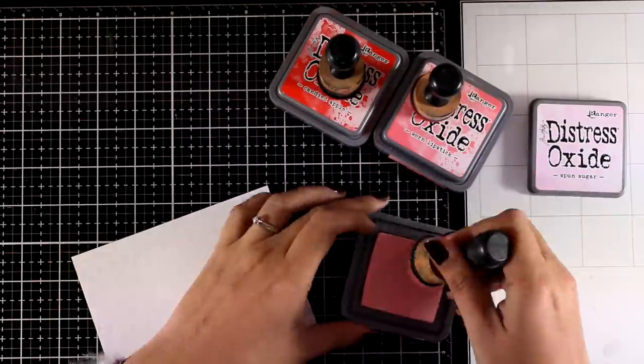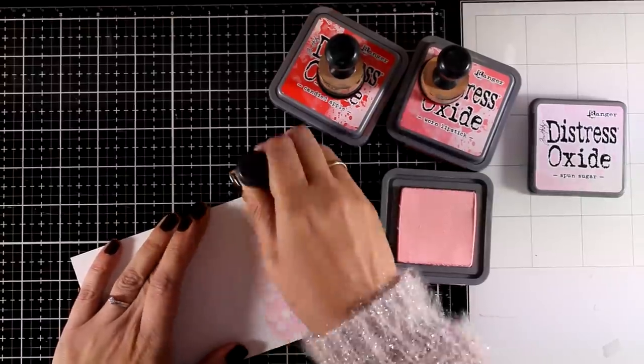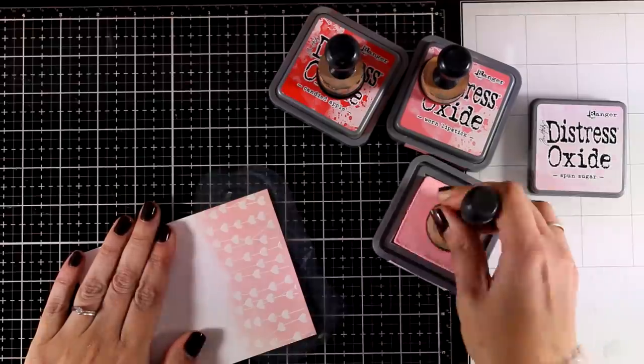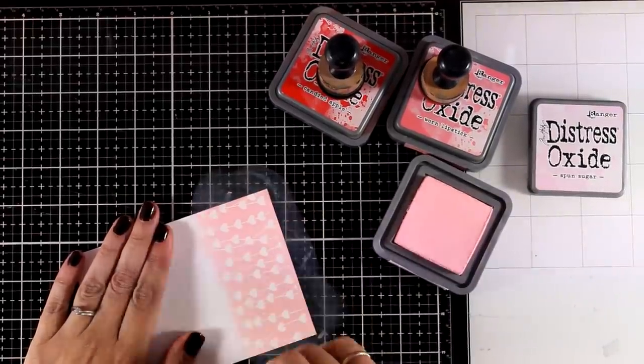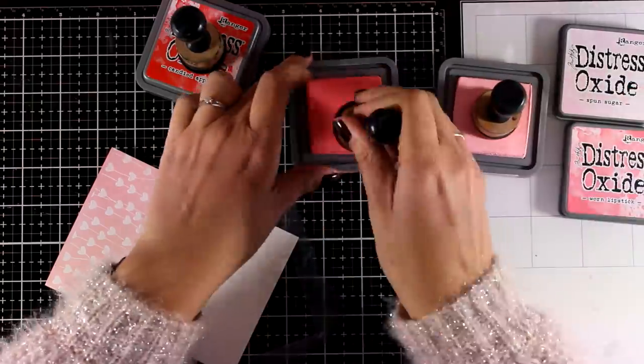And now I'm going to do some ink blending which is one of my favorite techniques especially when it comes to doing that with Distress Oxide Inks. These blend beautifully. Now the three colors that I'm using are Spun Sugar, Worn Lipstick and Candy Apple.